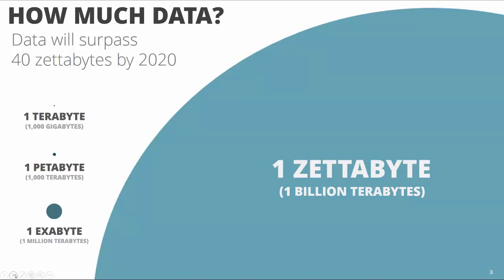Right off the bat here in this webinar, which is about good information design, I have already violated one of the principles of good information design. That principle is: avoid distorting the data and misleading the user. I've essentially done that here, because with these circles I've tried to give you a visual representation of how large a zettabyte is. But it's actually misleading, because if I were going to draw this true to scale, that circle representing a zettabyte would actually need to be 473 miles in diameter. Hopefully that corrects my mistake and gives you a picture of how much data is out there and how much it's grown.